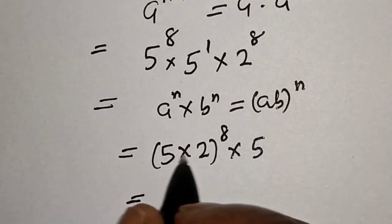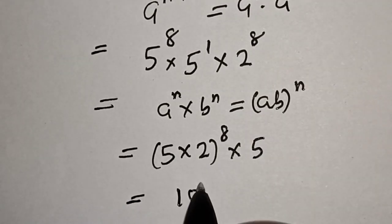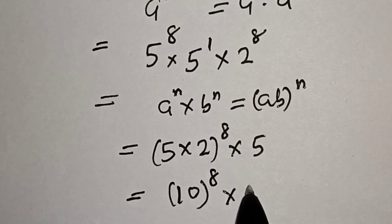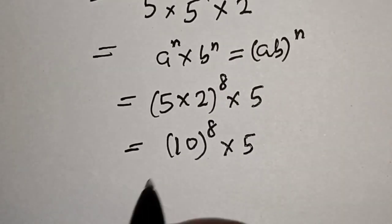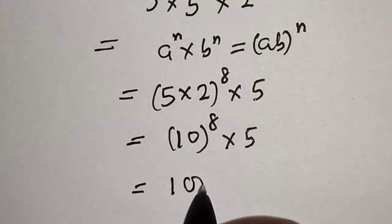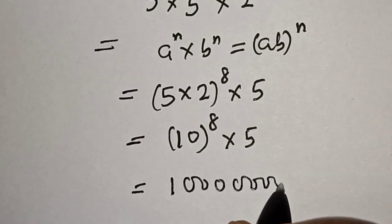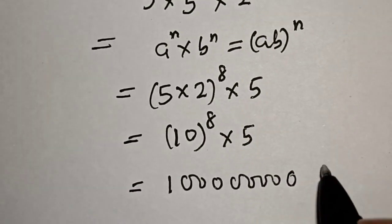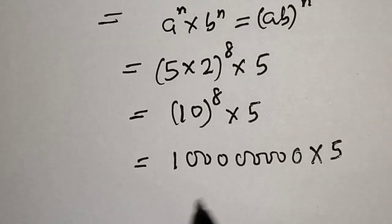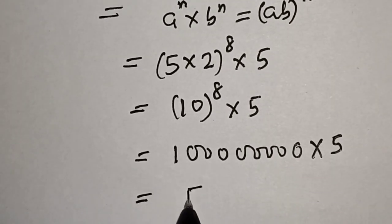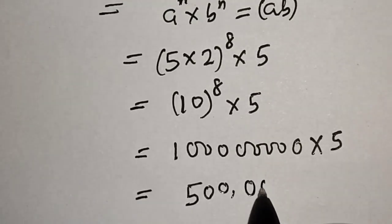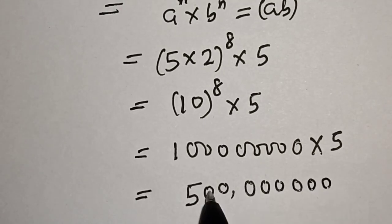So we have 10 raised to power 8 multiplied by 5. Now 10 raised to power 8 is equal to 1,000,000,000 — that's 1 followed by 8 zeros. Multiplying everything together, we get 500,000,000, which is 500 million.